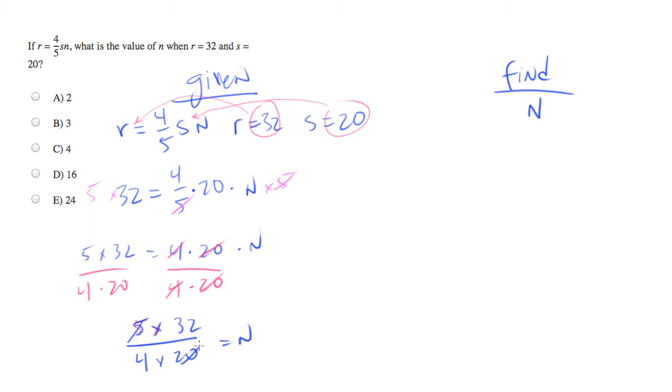So 5 and 20 can cancel out with a 4 left over. 4 and 32 will cancel out with a 2 left over. So n equals 2, which is answer choice A.